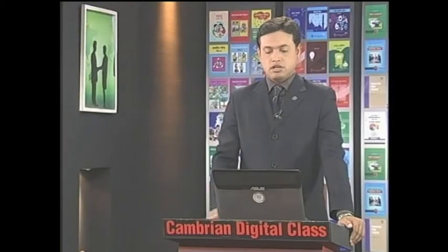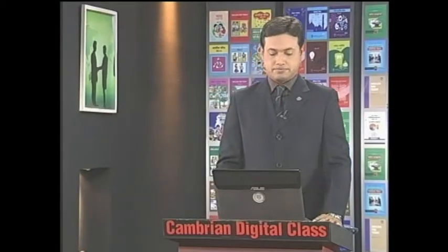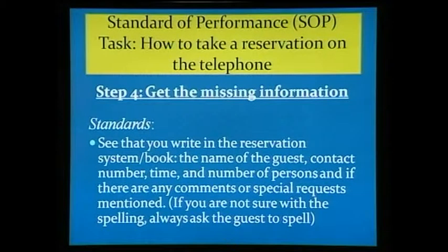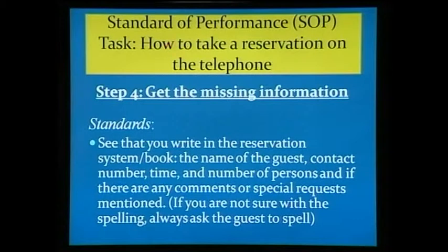See that you check physically in your reservation system or book if there is an available table. Then step four: get the missing information. The standards are to write in the reservation system or book the following — the name of the guest, contact number, time, and the number of persons, and if there are any comments or special requests mentioned. If you are not sure with the spelling, always ask the guest to spell for you.